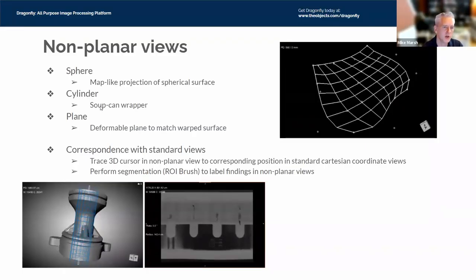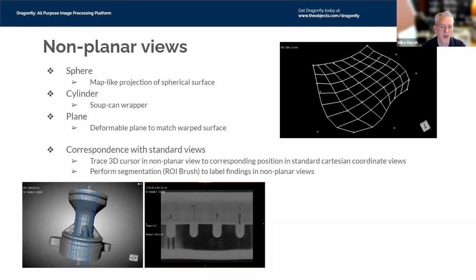To summarize non-planar views: there's the cylinder ('soup can wrapper'), the sphere (map-like projection), and also a plane — useful if a feature should be planar but is warped or curved. You can deform a plane and see its non-planar view projected onto a flat plane. You get correspondence with standard views, tracing the 3D cursor in non-planar views to see the corresponding position in Cartesian coordinate views. For example, for a cylindrical inner surface, you can see defects on that inner surface that would be very hard to see in cross-sectional views.